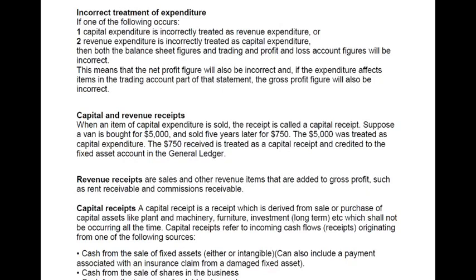Reversing the scenario: if we filled our motor vehicle with petrol — which should be treated as an expense — but by error treated it as a non-current asset, the non-current asset is overstated on the balance sheet and expenses are understated on the income statement. This means profit is overstated. This breaches the prudence concept, which states that assets and profits shall not be overstated.